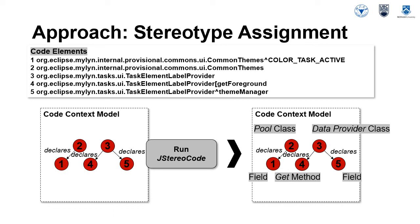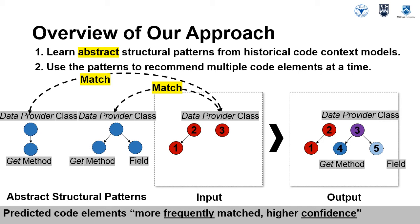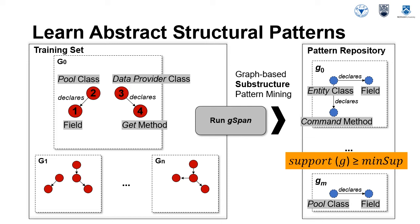J-stereocode identifies the stereotype for each node in the code context model. For instance, node 3 is a data provider class and node 4 is a get method. Therefore, instead of concrete structural patterns, our approach learns abstract structural patterns where each code element in the training set has been assigned a stereotype. A repository of topological patterns is populated by graph-based substructure pattern mining. Specifically, we run G-span with the training set as input and minimum support as a parameter. G-span uses depth-first search to find any connected subgraph G such that the support for each G is greater than a minimum support threshold.